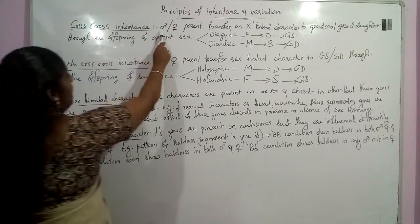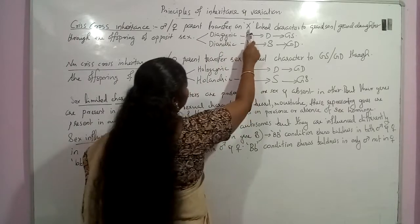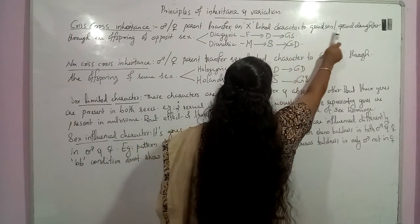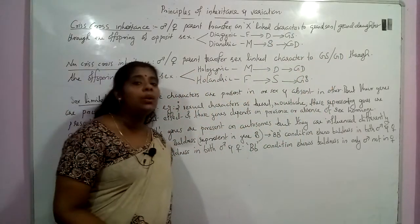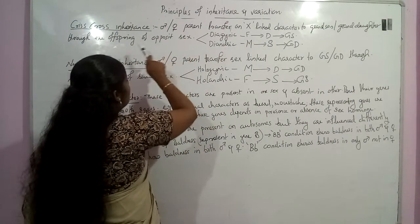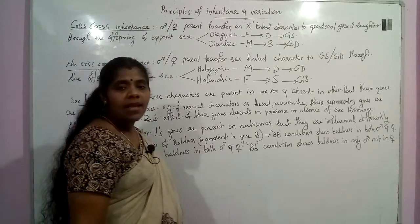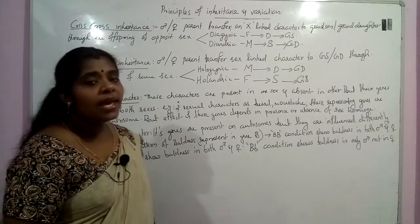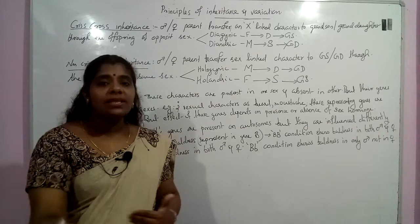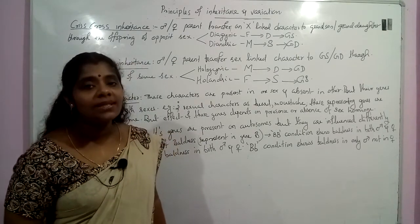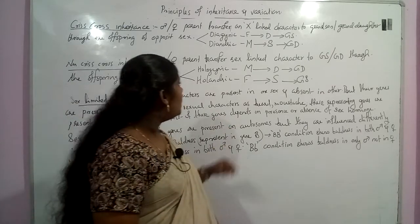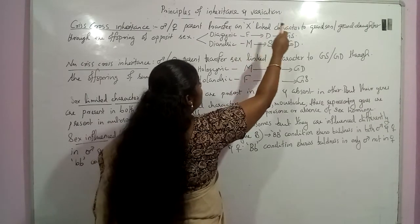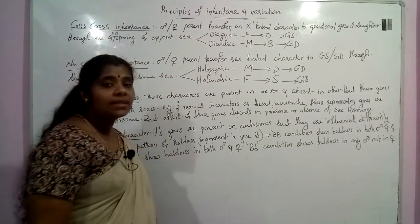Once again: a male or female parent transfers an X-linked character — passes its X chromosome — to the grandson or granddaughter through the offspring of the opposite sex. So here, if that X chromosome is passing to your daughter, and that X chromosome then reaches to the grandson, that is called Criss-Cross inheritance.